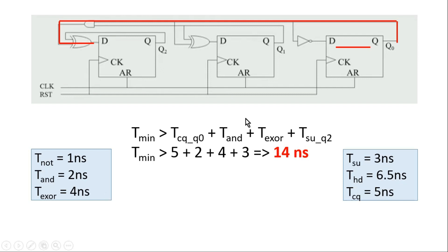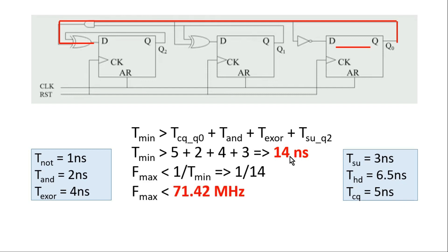Setup time of the flip-flop is 3 nanoseconds. Adding them together: 5 + 2 + 4 + 3 = 14 nanoseconds. So the minimum time period must always be greater than 14 nanoseconds. The maximum frequency of operation is 1 / 14 ns, which equals 71.42 megahertz.